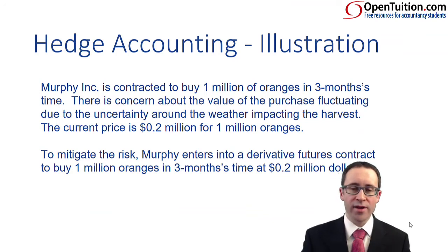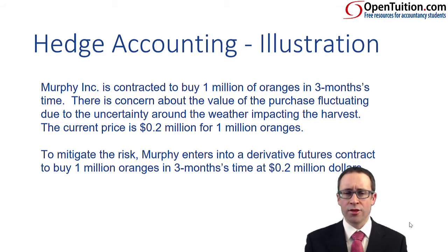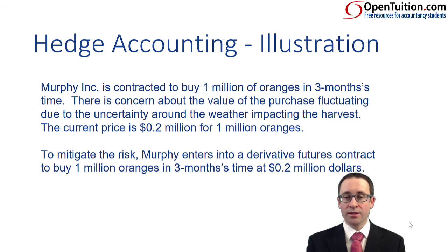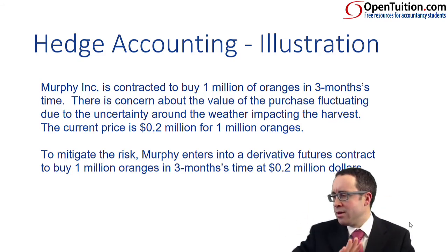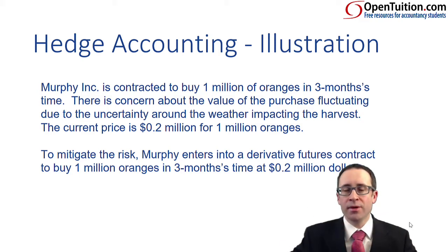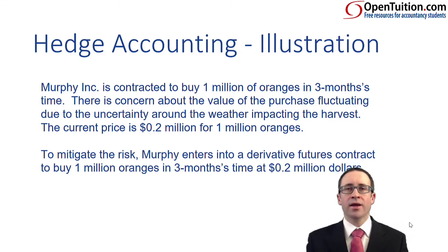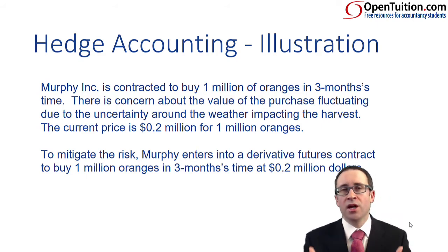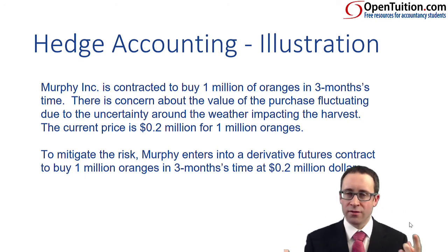Here's an illustration. Murphy Inc is contracted to buy one million oranges in three months' time. There's concern about the value of the purchase fluctuating due to uncertainty surrounding the weather impacting the harvest. If there's bad weather there may be a poor harvest, in which case the price will go up. If the weather is good, there's a surplus of oranges and the price will go down. So in the future, you pay more or less for the oranges depending upon the weather — and you can't predict the weather.